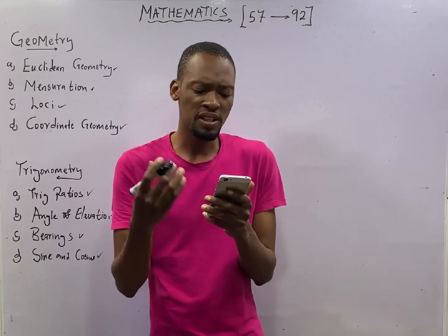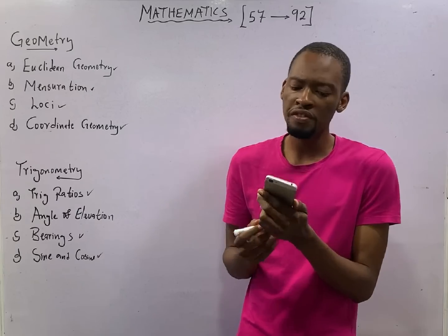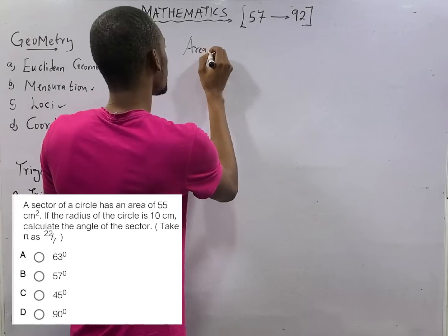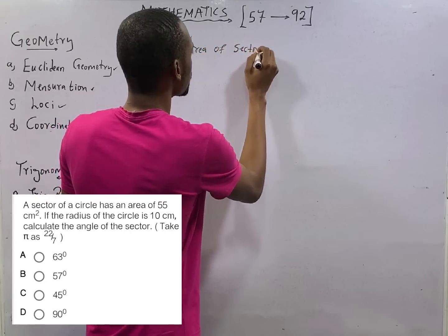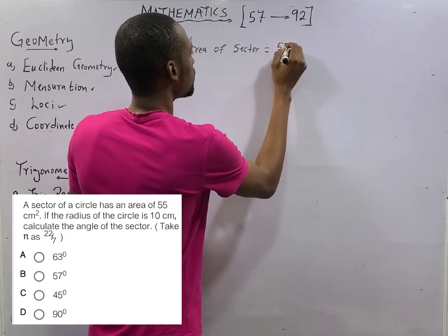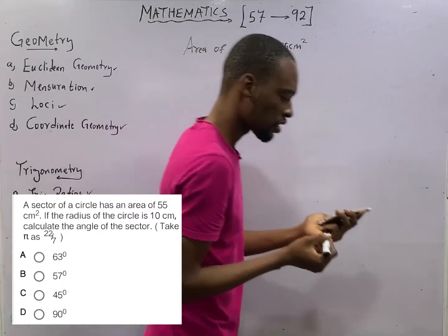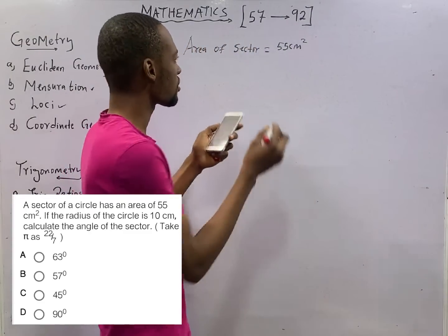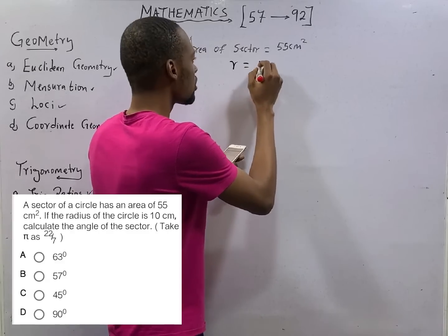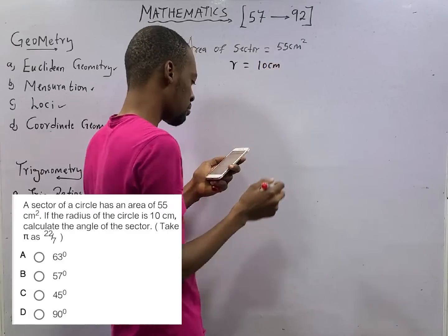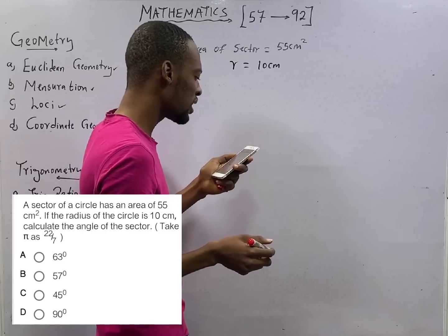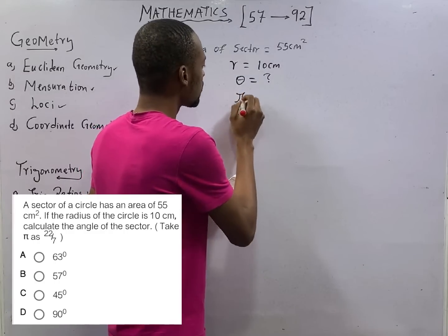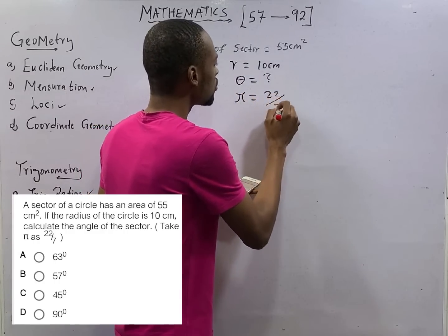Let's see the next question. A sector of a circle has an area of 55 centimeters squared. Area of a sector is equal to 55 centimeters squared. That is the area of a sector. If the radius of a circle is 10 centimeters, calculate the angle theta. Taking pi to be 22 over 7.